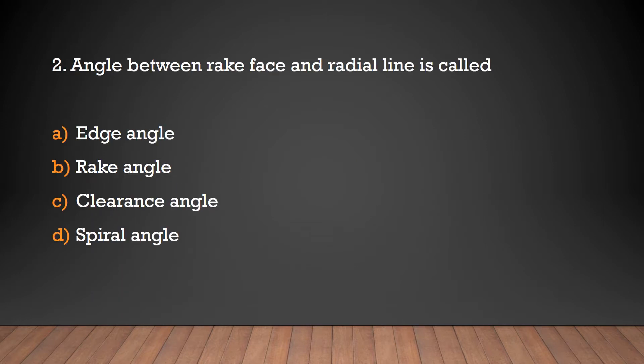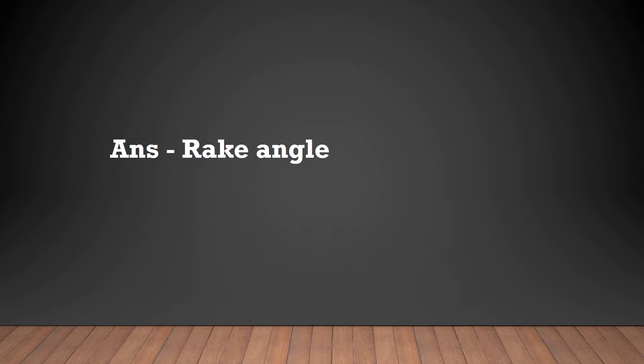Question 2: Angle between rake face and radial line is called edge angle, rake angle, clearance angle, or spiral angle? Answer: rake angle. Angle between rake face and radial line is called rake angle.